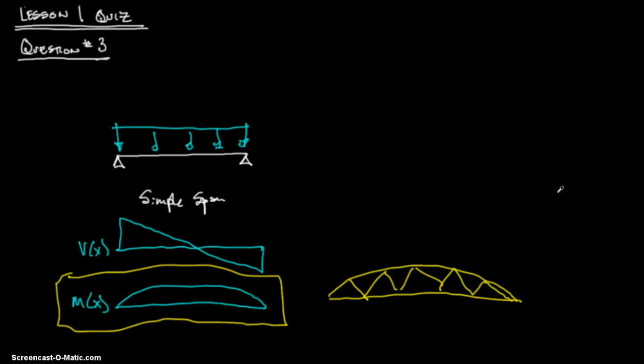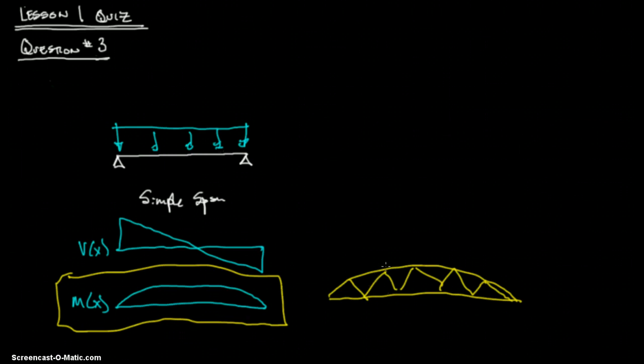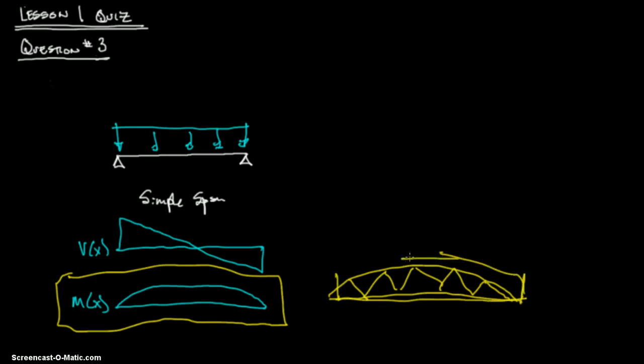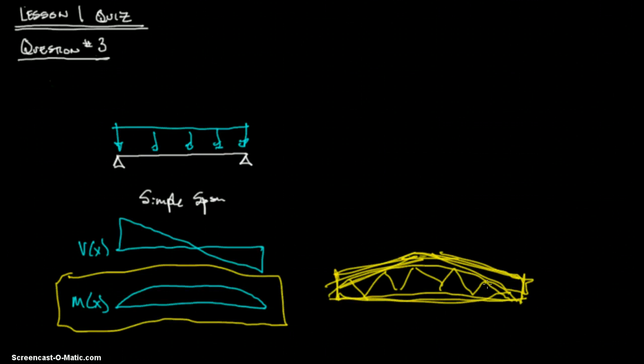Looks like a bowstring truss is pretty much perfect, actually. And then a tapered girder is cracked. A tapered girder kind of looks like this. I think it actually went up like that. So that's pretty darn close. Tapered girder. I would say a bowstring truss, a tapered girder. And it looks like that's about it.